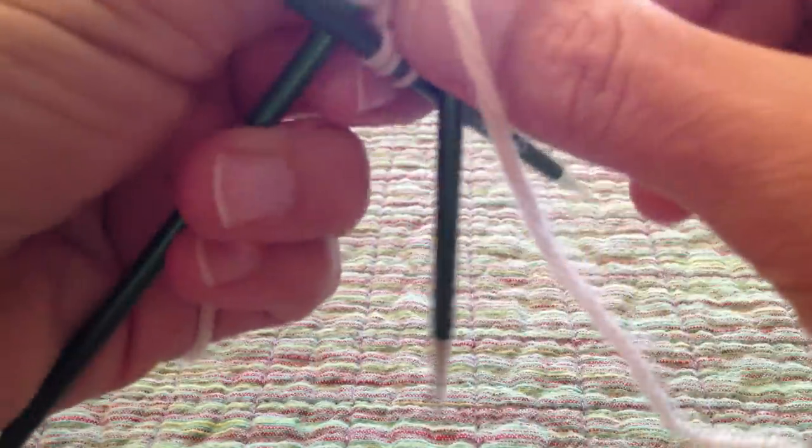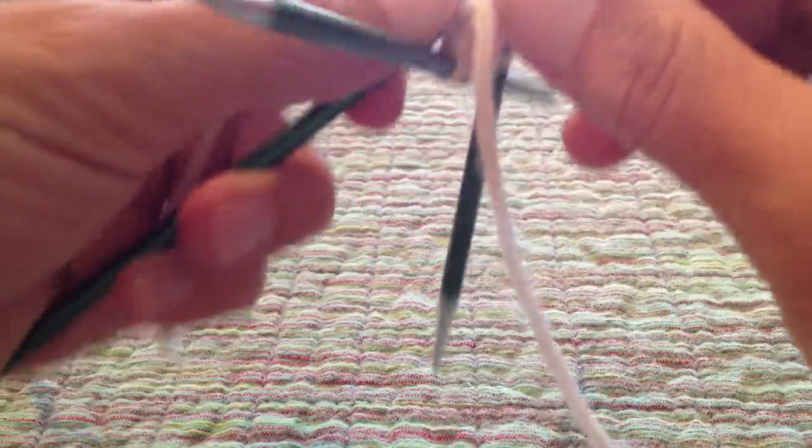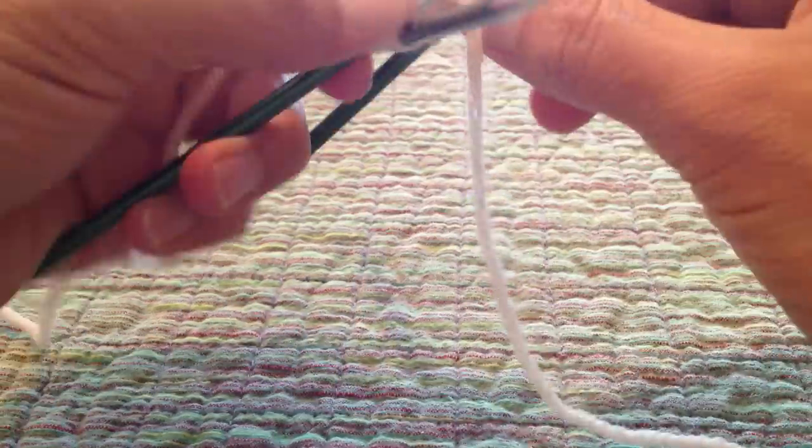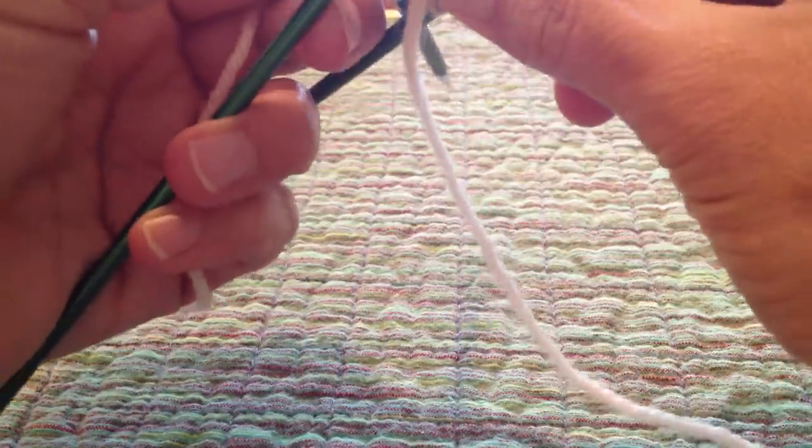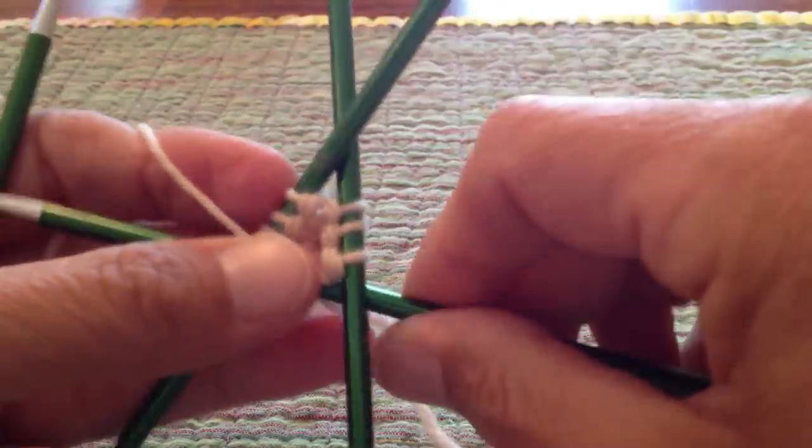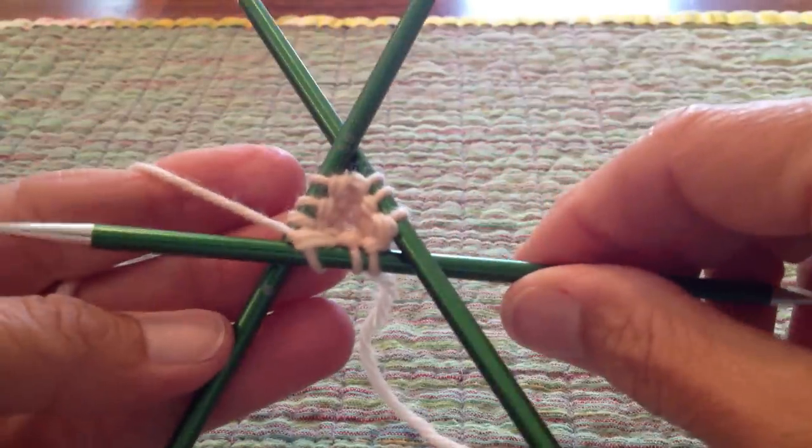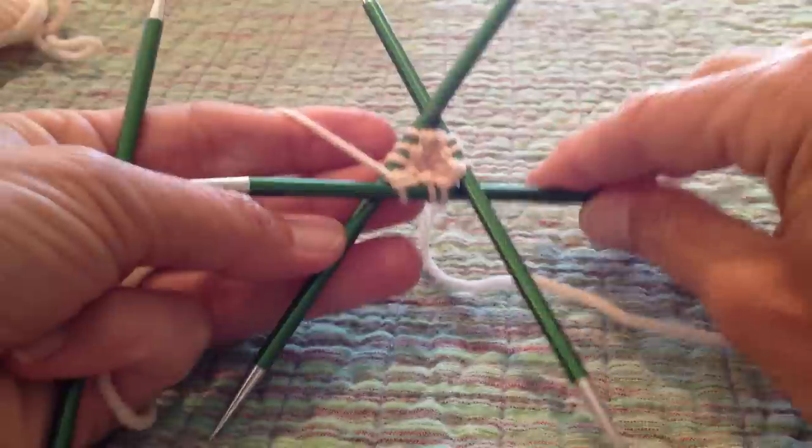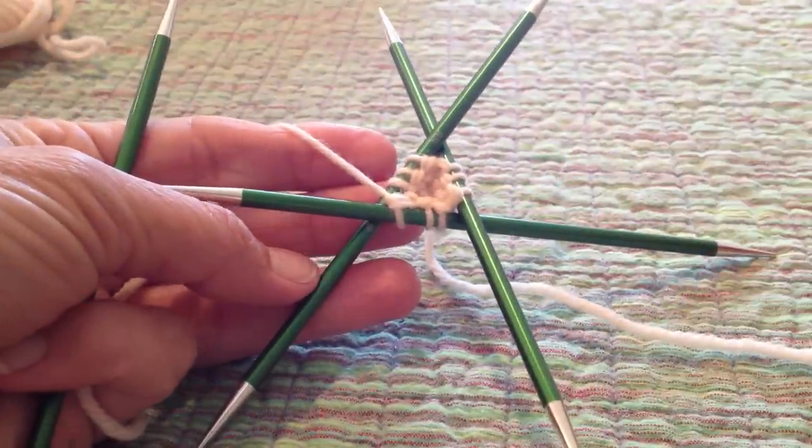I don't mind doing that at all. I've already completed one round, so there we go. That's the inside of my circle there. I've got nine stitches on three beautiful signature double-pointed needles.